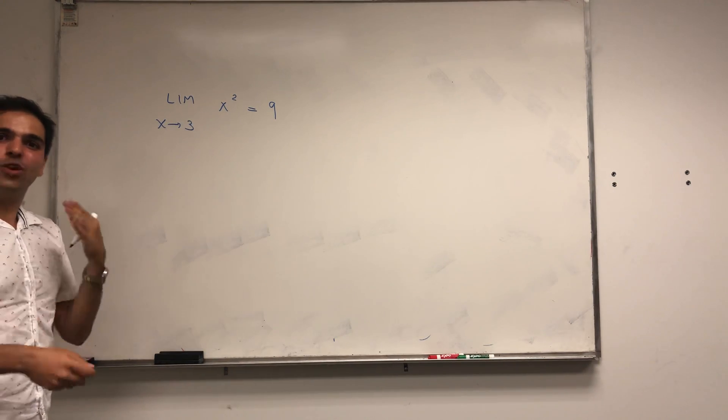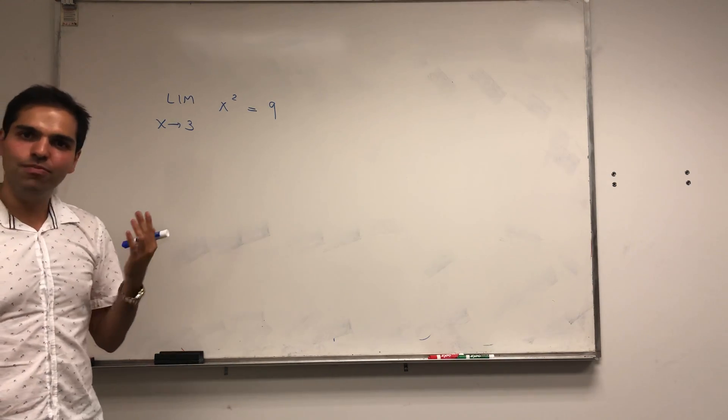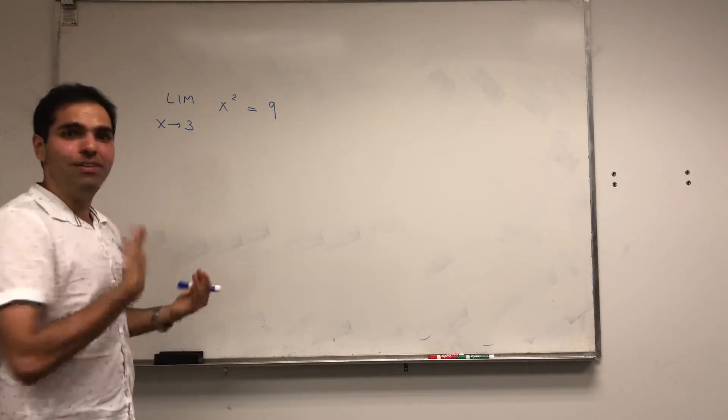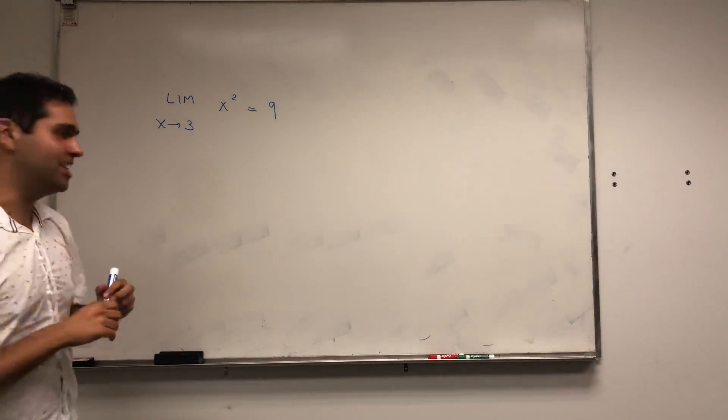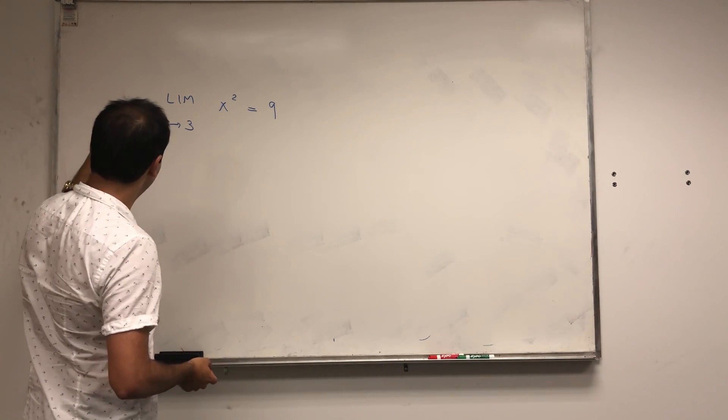Let me quickly recap the definition of epsilons and deltas. If you want to see more intuition behind it, please make sure to see my other video. Limit x goes to 3 of x squared equals 9.